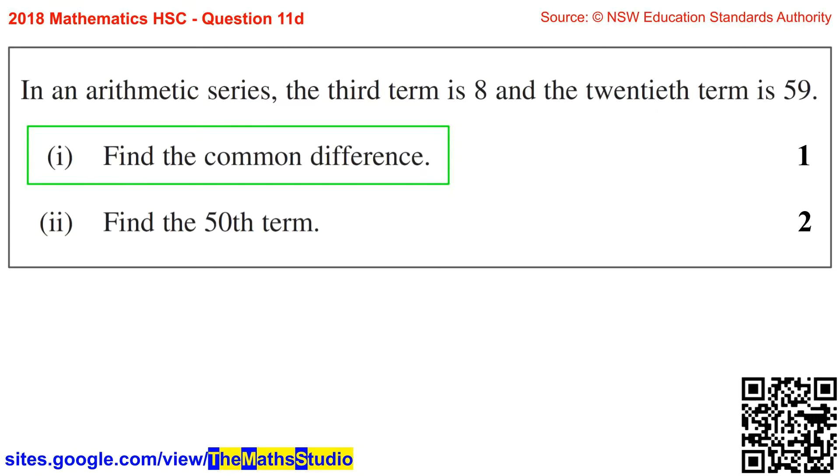Question 11d. In an arithmetic series, the 3rd term is 8 and the 20th term is 59. Part 1: Find the common difference.